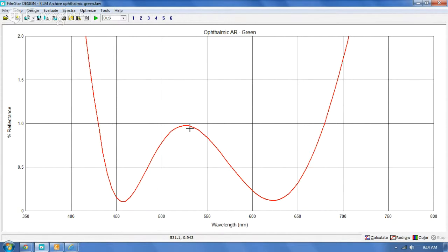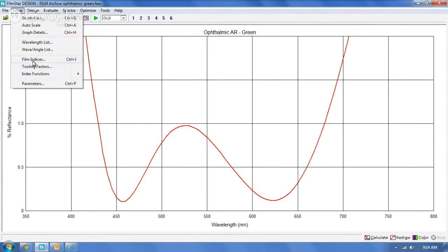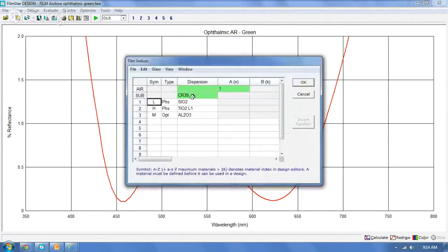Some of the coatings that are coming out now are starting to look blue and they're being marketed to people for different reasons. But as you can see, if we go into the film indices, you can see I have a design that's using SiO2 and TiO2 on CR39. Now CR39 with an index of approximately 1.5 at around 550, if I change that